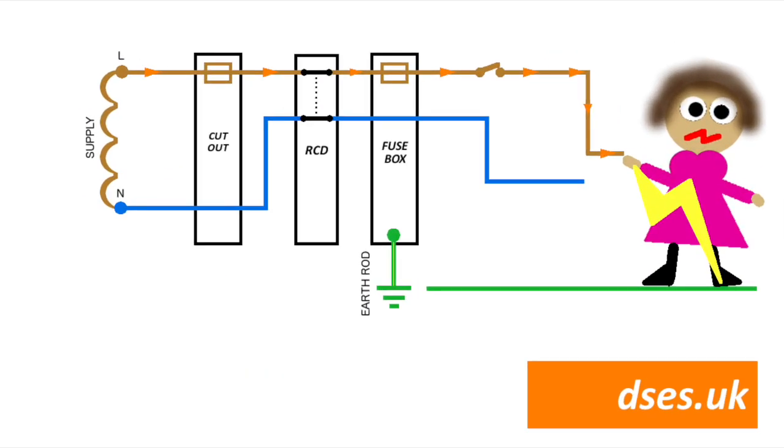And this is why the residual current device is a better option in modern installations. Unlike the voltage operated earth leakage circuit breaker which requires a connection to earth and for a fault current to pass through it in order to operate, an RCD has no connection to earth at all. An RCD effectively monitors the current going out against the current coming back and will trip off if there is an imbalance between the two. It isn't concerned about where that current is leaking.